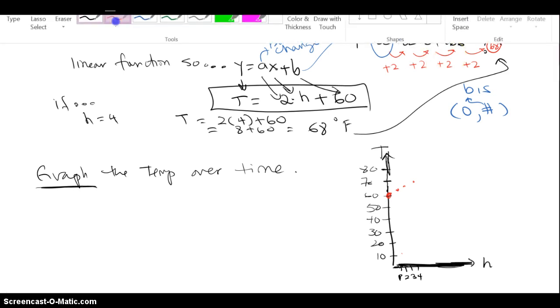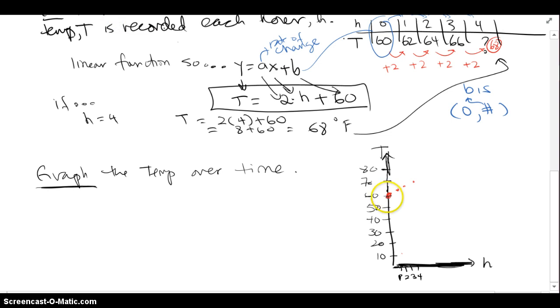And again, I'm just doing a rough, quick sketch, and as you can see, the temperature started at 60, and it's going to slowly rise and go up and up. And you can see that the dots appear to be linear and graph into a straight line.